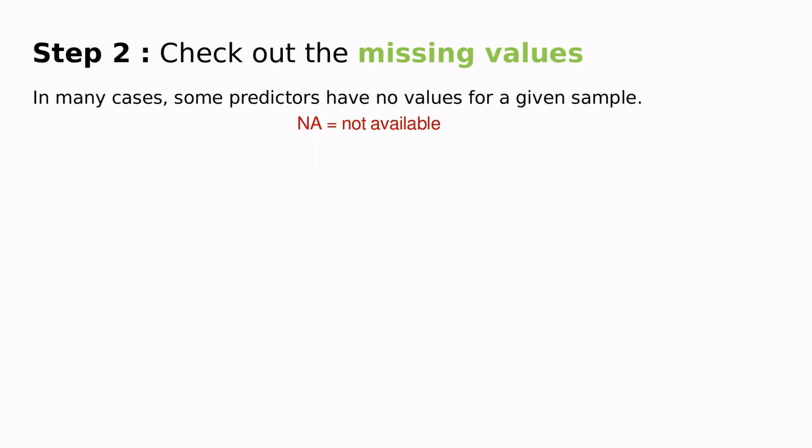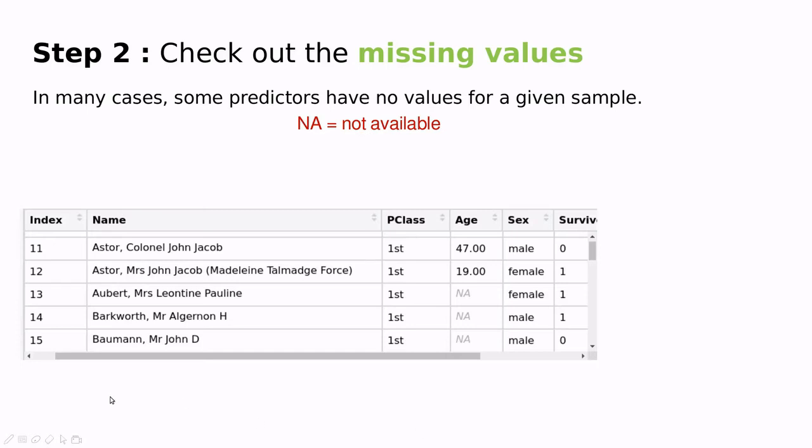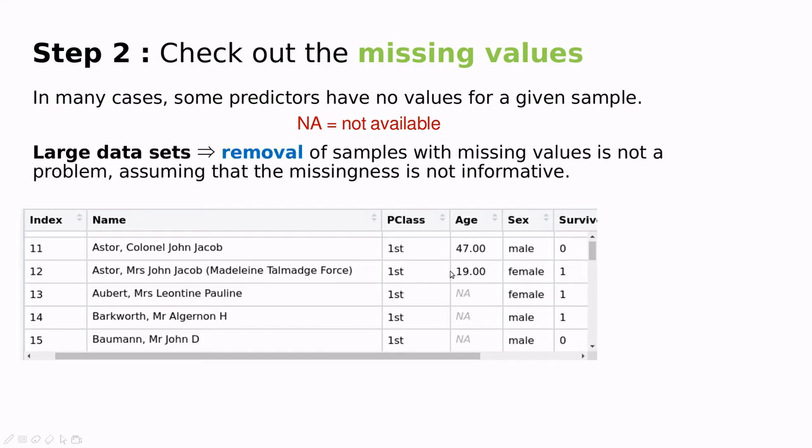Checking out for missing values. In some cases, some predictors have no values for a given sample. We're going to call those values generically NA or not available. Take a look at this Titanic dataset. Passenger number 13 didn't have the age recorded. If the dataset is large enough, we can remove those samples and pay the price of dropping some of the data.